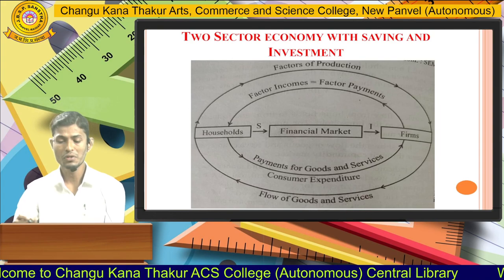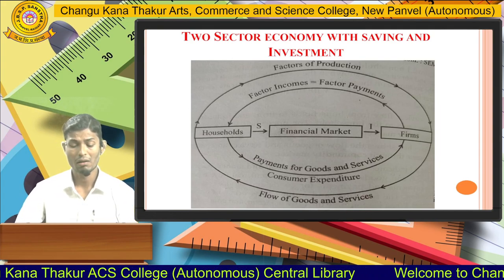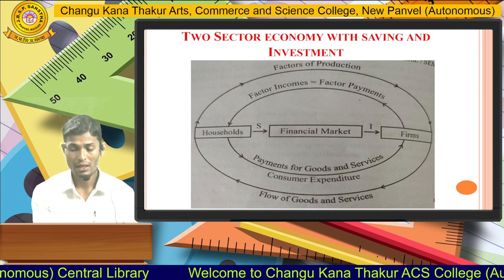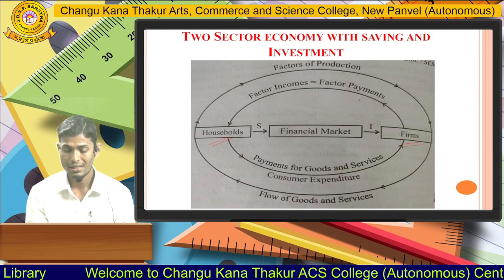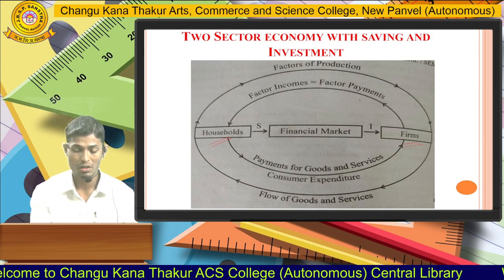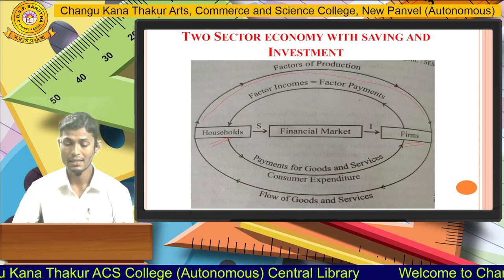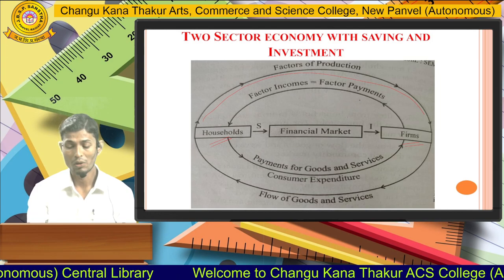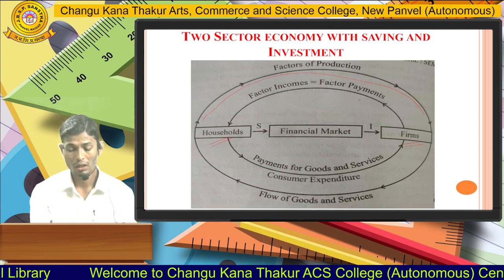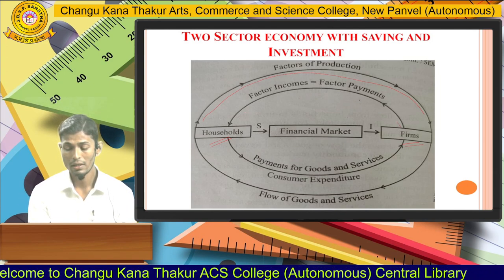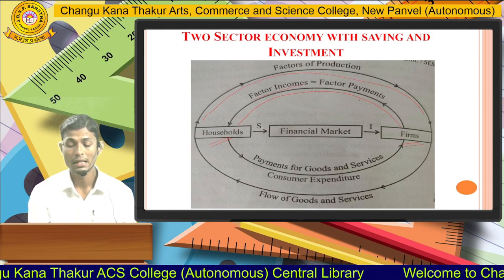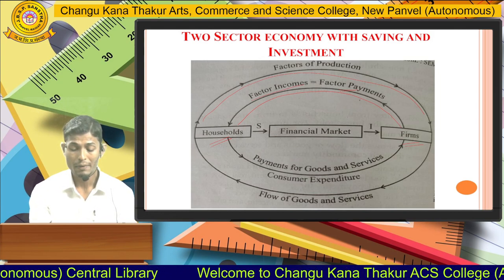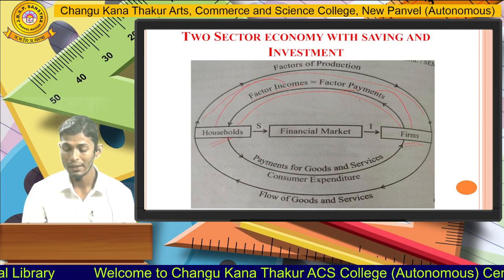Now if you see the diagram — in the previous discussion we saw the two-sector economy without savings; here we will consider savings and investment. As I told you, there are two sectors in the two-sector economy: households and firms. Households give factors of production to firms — land, labor, capital, and entrepreneurship. In return, firms give factor income to the households. The arrows going towards the households represent factor incomes, equal to factor payments made by firms.